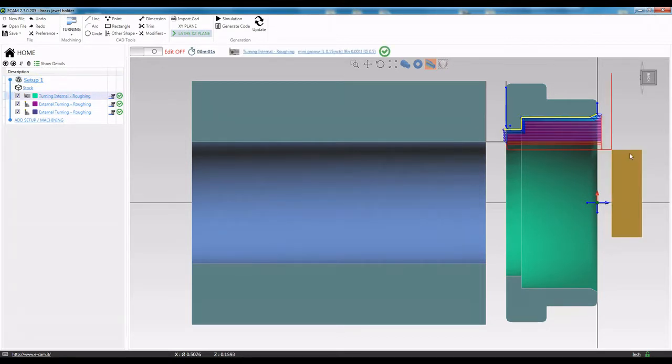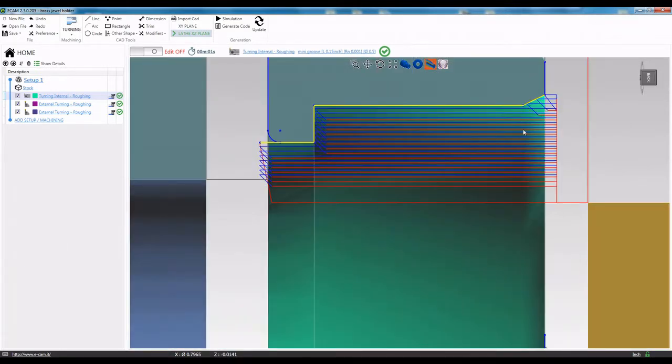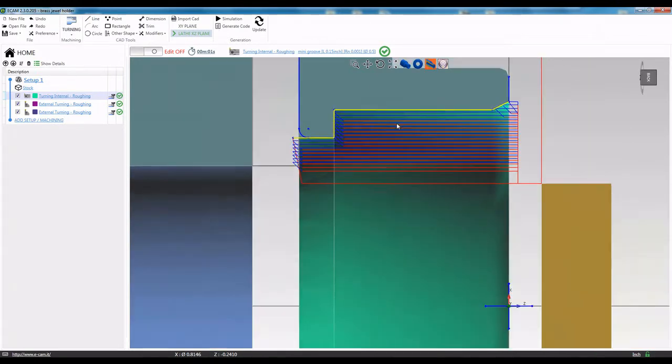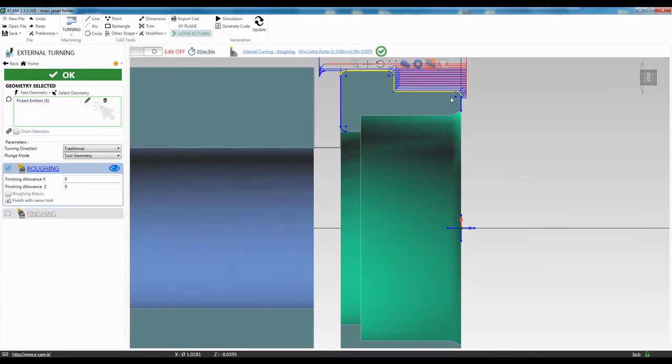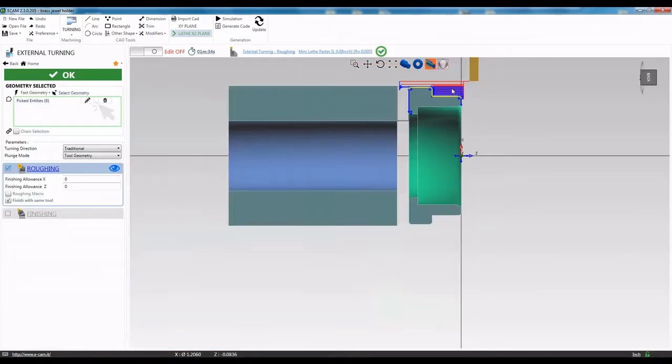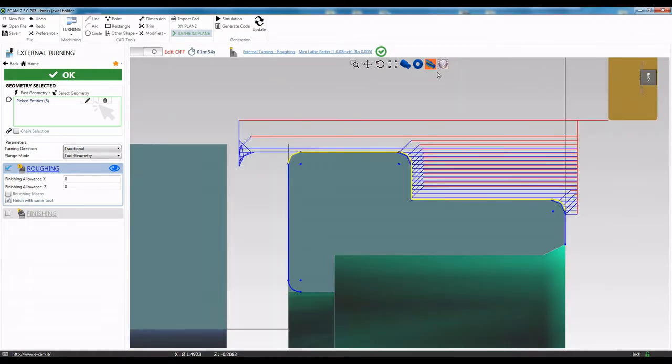Here you can see the toolpath for the internal boring bar. And here is the toolpath for our external turning tool. We will use the same tool to part off our part.